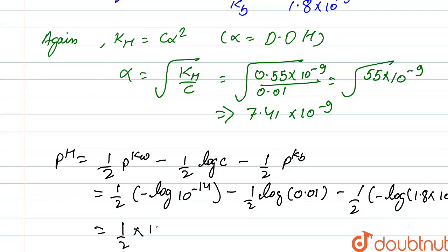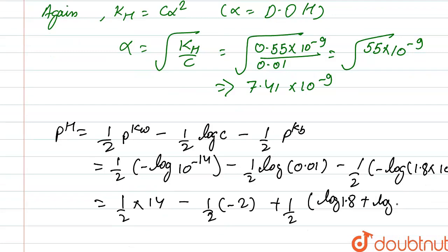Half of 14 minus half of minus 2, and the minus comes outside the bracket, so it becomes plus. It is log of 1.8 plus log of 10 to the power minus 5.